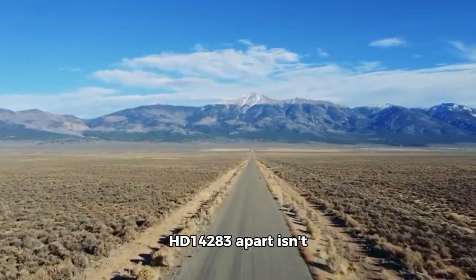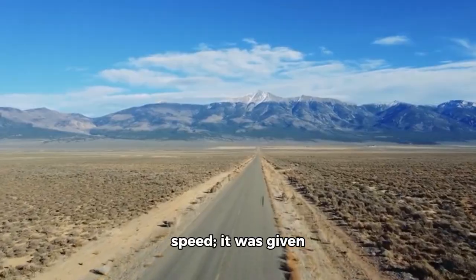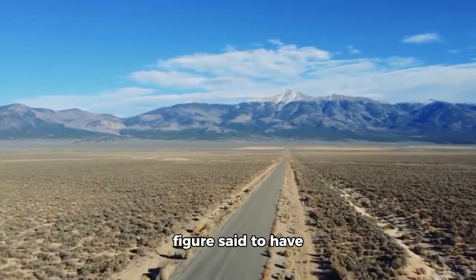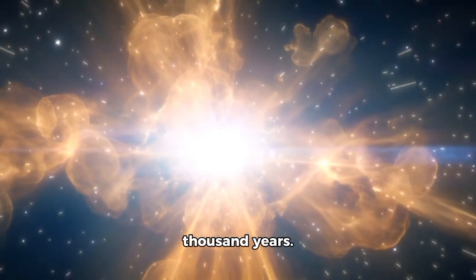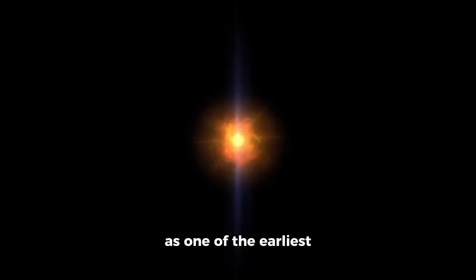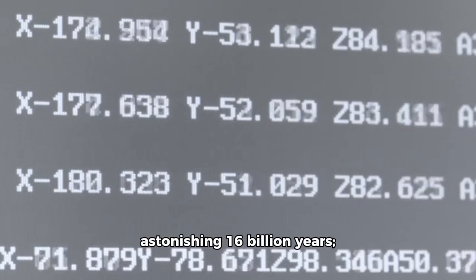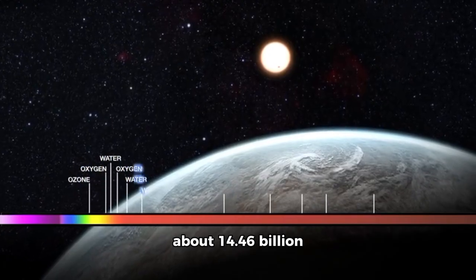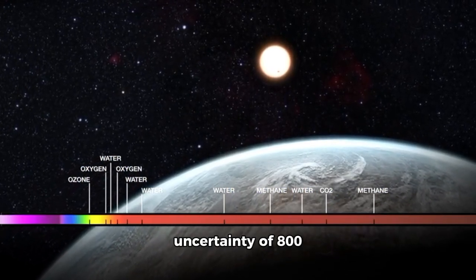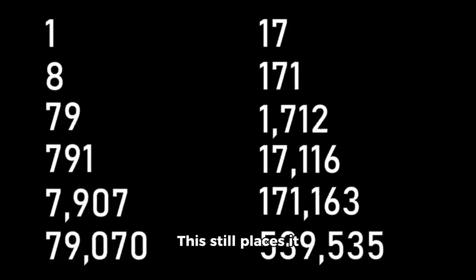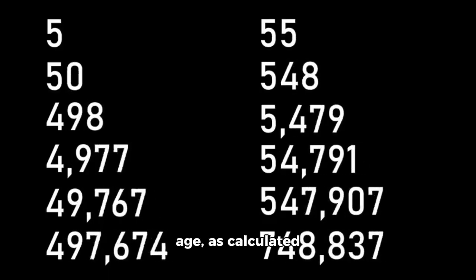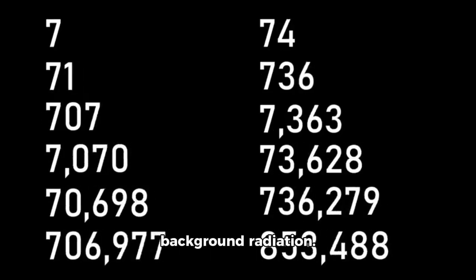Yet, what truly sets HD 1483 apart isn't its journey or speed. It was given the name Methuselah in honor of the legendary biblical figure said to have lived nearly a thousand years. This star is regarded as one of the earliest ever observed. Initial calculations put its age at an astonishing 16 billion years. More recent estimates have refined this to about 14.46 billion years with an uncertainty of 800 million years. This still places it older than the estimated universe's 13.8 billion year old age.